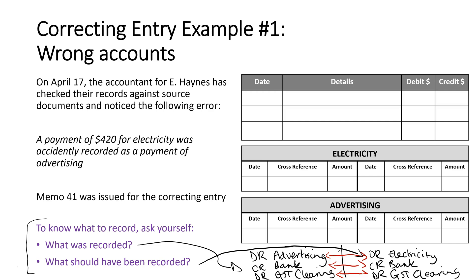The first thing I need to do in my General Journal is reverse the error. So on April 17, I'm going to put advertising — and in order to reverse this, since I originally debited it, I'm going to credit it four hundred and twenty dollars. Now to record what should have happened, I need to debit electricity. What I'm showing here is the decrease in the advertising expense, because that was my mistake, and the increase in my electricity expense, because that's what should have been recorded.